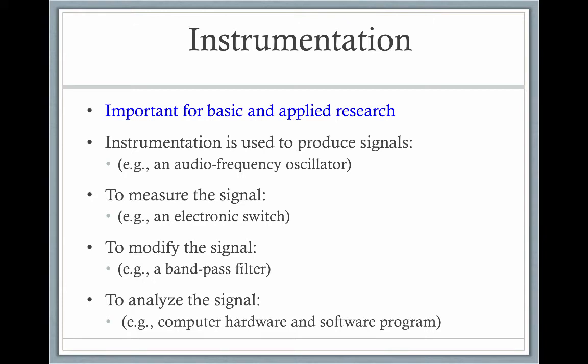Instrumentation is important for both basic and applied research. It is used to produce signals — for example, an audio frequency oscillator. It is used to measure the signal — for example, an electronic switch. It is used to modify the signal — for example, a bandpass filter. And it is used to analyze the signal — for example, computer hardware and software programs.